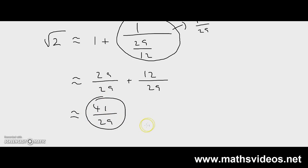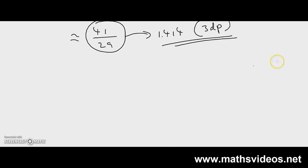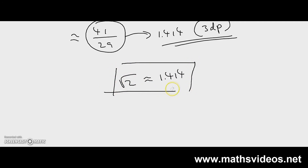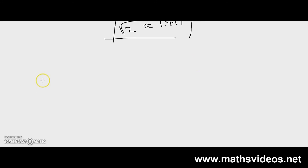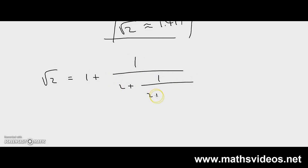What is 41 over 29 on your calculator? It turns out that it is 1.414 to 3 decimal places. And many of us know that the square root of 2 is approximately equal to 1.414. So what I've proven to you in this video is that the square root of 2 is in fact equal to 1 plus 1 over 2 plus 1 over 2 plus 1 over 2 plus 1 over 2, to infinitum. If you have any questions concerning this video, please leave your comments below. Thank you very much for watching.